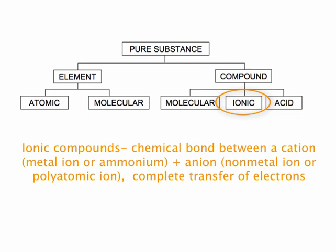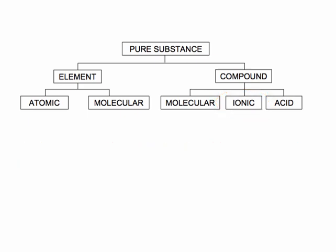Or ammonium, which is NH4+, bound to a nonmetal, which is an anion, or polyatomic ions. And ionic compounds completely transfer electrons from the cation to the anion. And that is the distinguishing feature of ionic compounds.